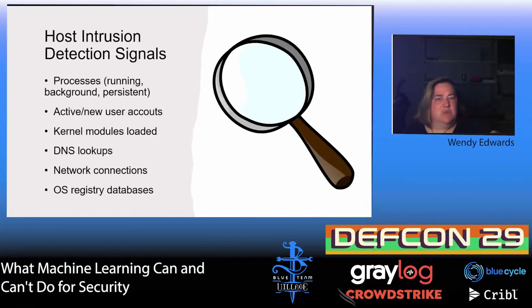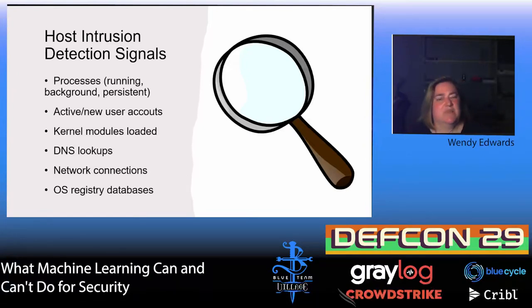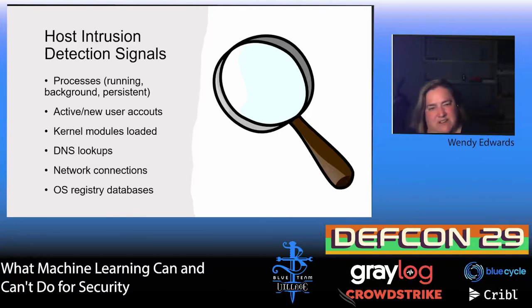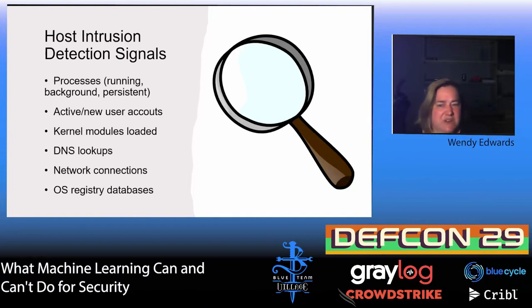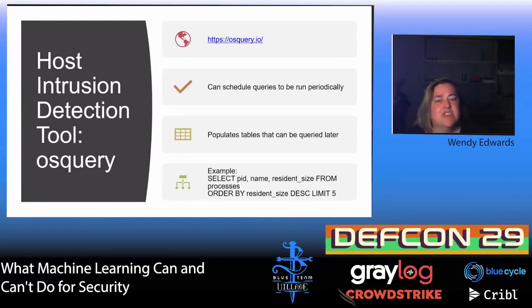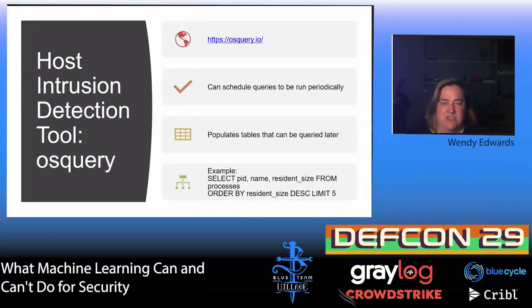For a host intrusion detection system, things you would look for include: your processes, a sketchy new user account, unusual kernel modules loaded, lookups to sites that are known bad, unusual network connections, or unexplained changes made to your registry. There's a useful tool for post-inclusion forensic inspection called OSQuery. It can measure reliability and compliance but it's often used for intrusion detection. You can schedule it and populate queries to be run later. One limitation is it is not built to operate in a known trusted environment and it does not have built-in orchestration, but it can work with Chef, Ansible, or Puppet.